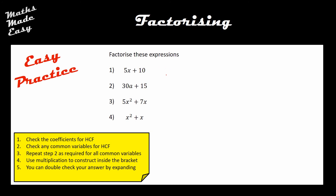For question one: the coefficients are 5 and 10. Highest common factor is 5, so step one is done. Checking for common variables: x appears in one term but not the other, so there are no common variables. Adding the bracket: I times 5 by x to make 5x, and I times 5 by 2 to make positive 10. That's the first one factorized.